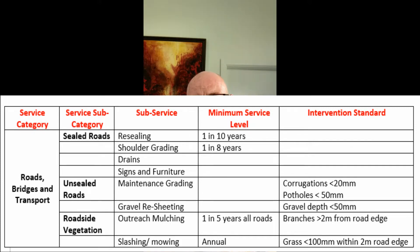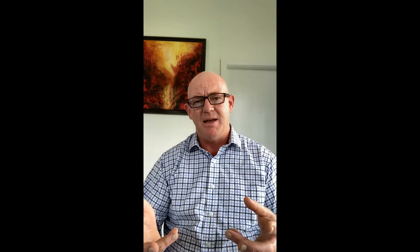Then we have a minimum level of service attributed to that. What's critically important is intervention standard — what the minimum level of service is designed to prevent. For example, with maintenance grading, the intervention standard is designed to stop corrugations greater than 20mm in height, or to have potholes less than 50mm. Through your periodic maintenance program you achieve your minimum standards and reduce the more expensive reactive service. That gives a better level of service to the community and decreases costs.